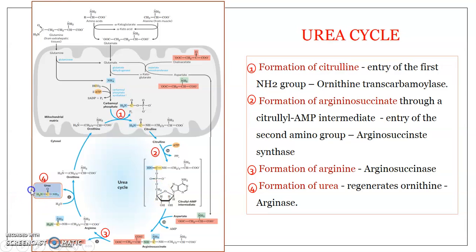The urea cycle is critically important: if urea is not produced, ammonia accumulates in the blood, resulting in hyperammonemia. Since ammonia is toxic, elevated concentrations affect most parts of the body, including brain cells. This leads to toxicity, vomiting, mental retardation, and accumulation of ammonia in brain cells. The urea cycle is therefore essential for maintaining normal physiological functioning.